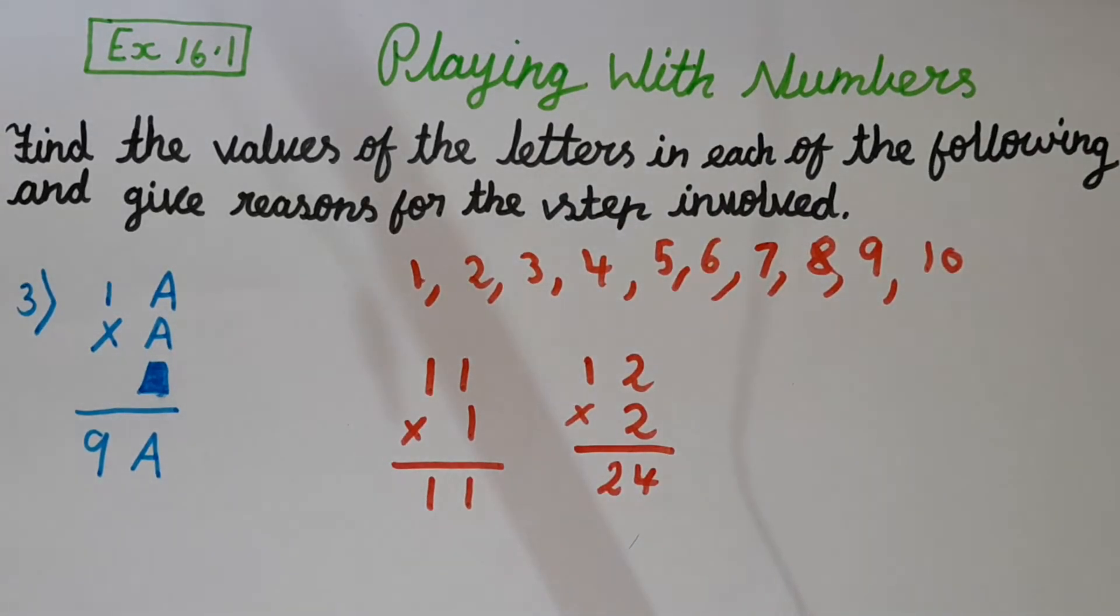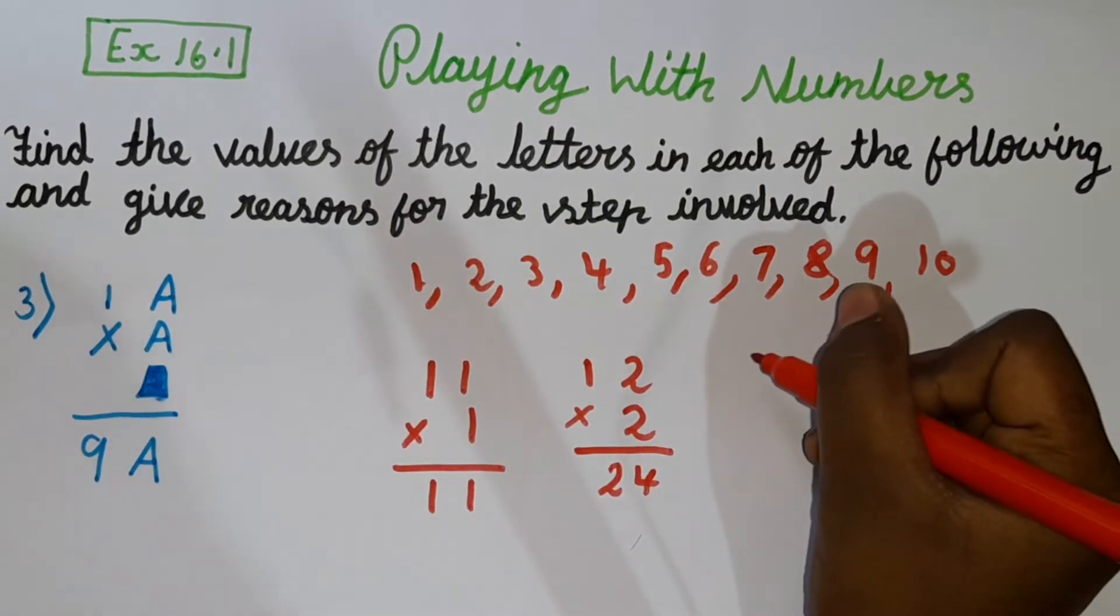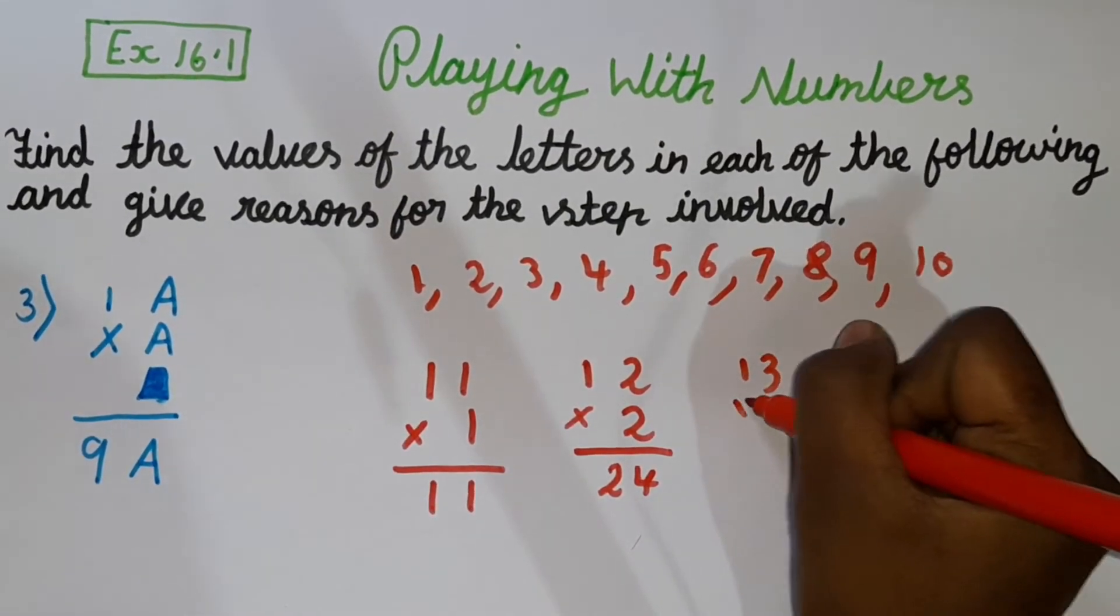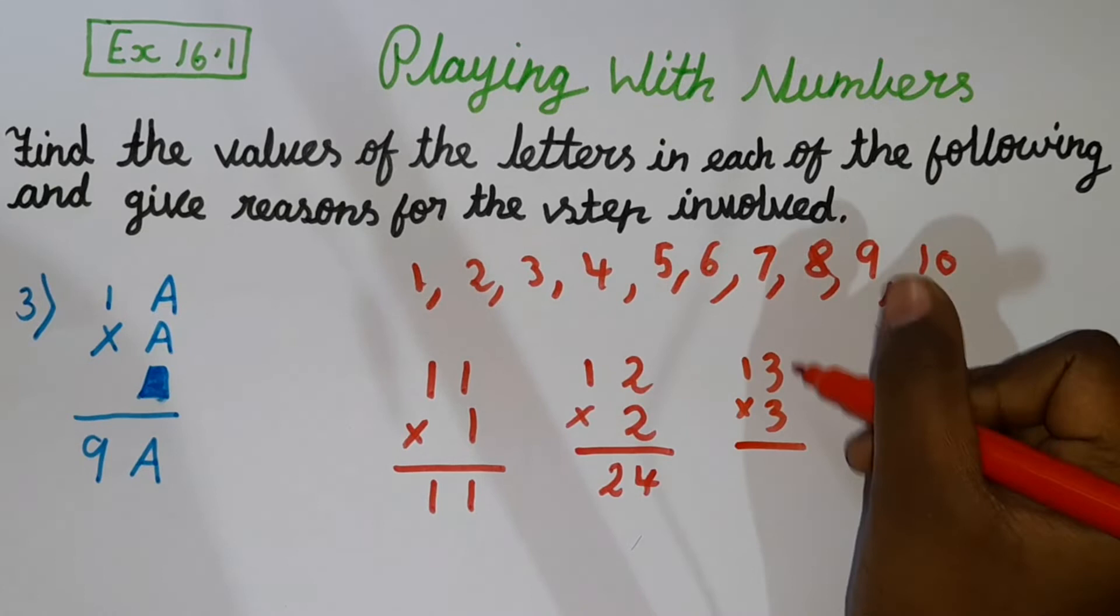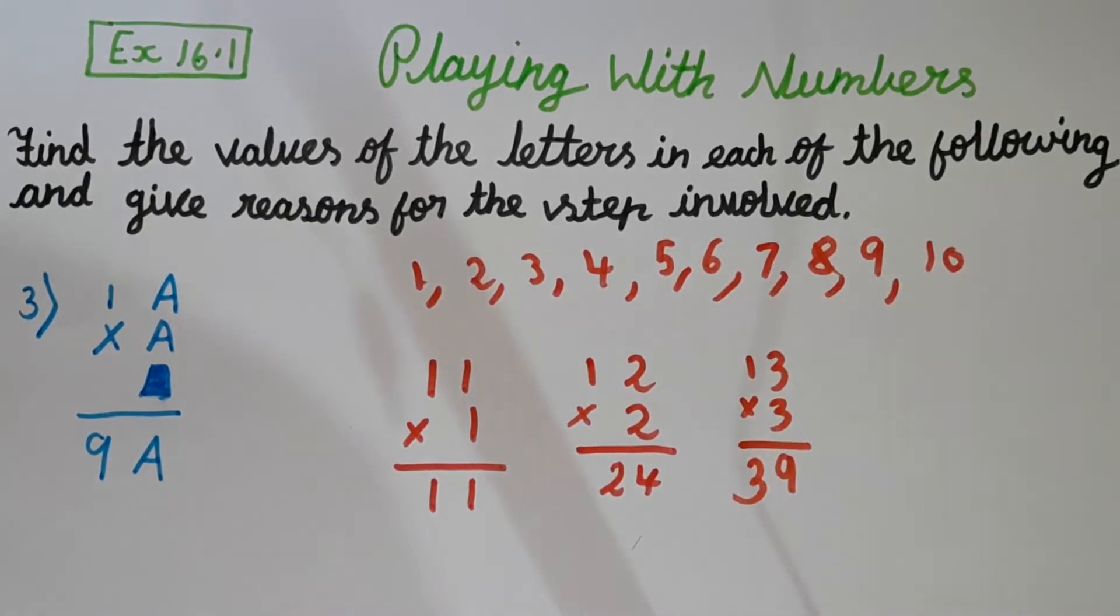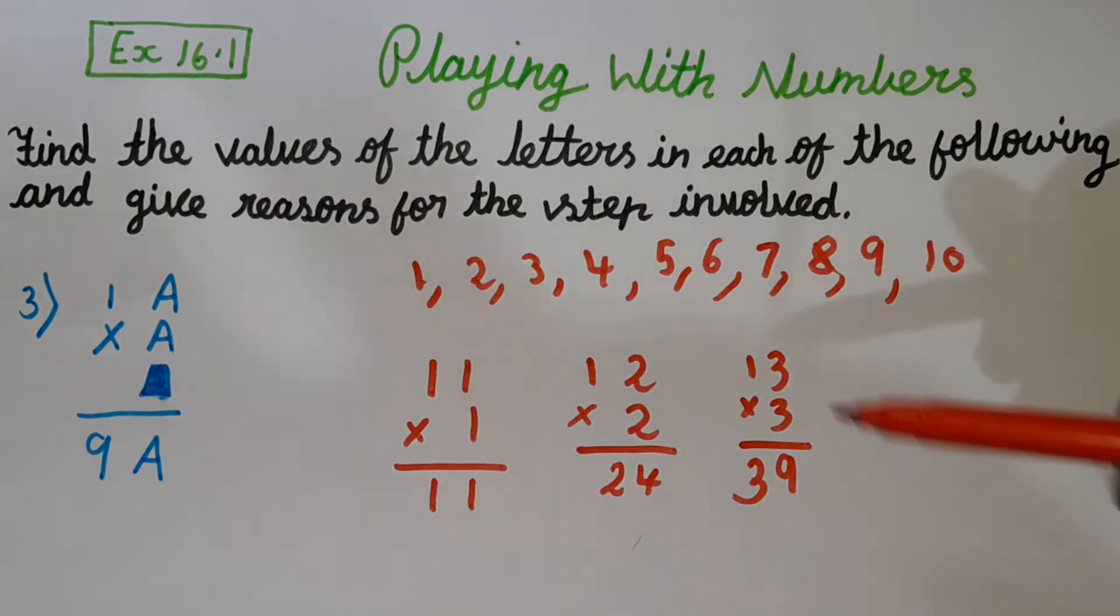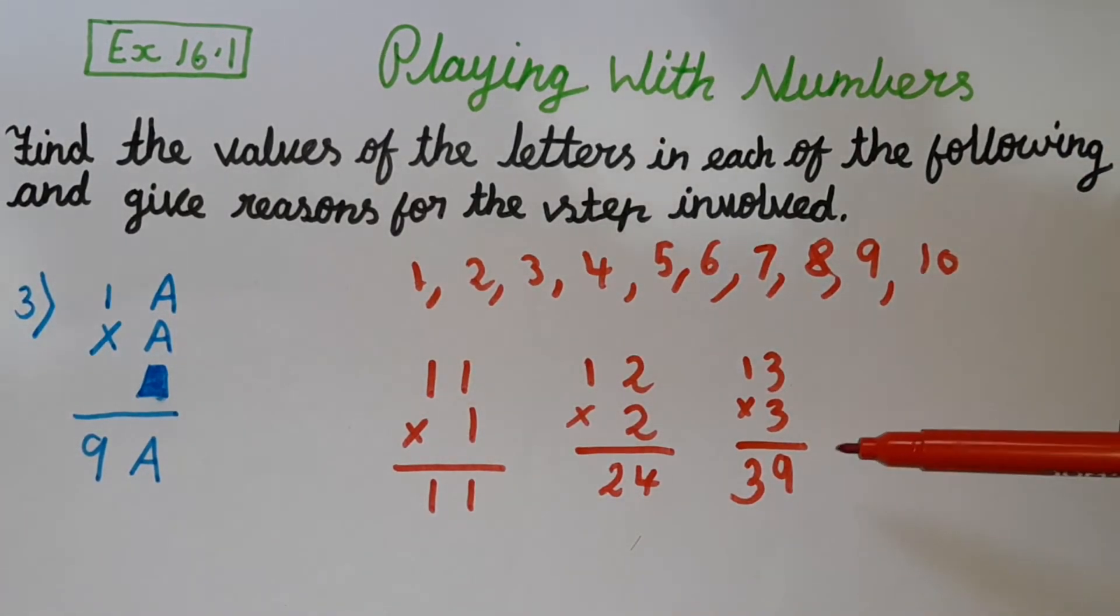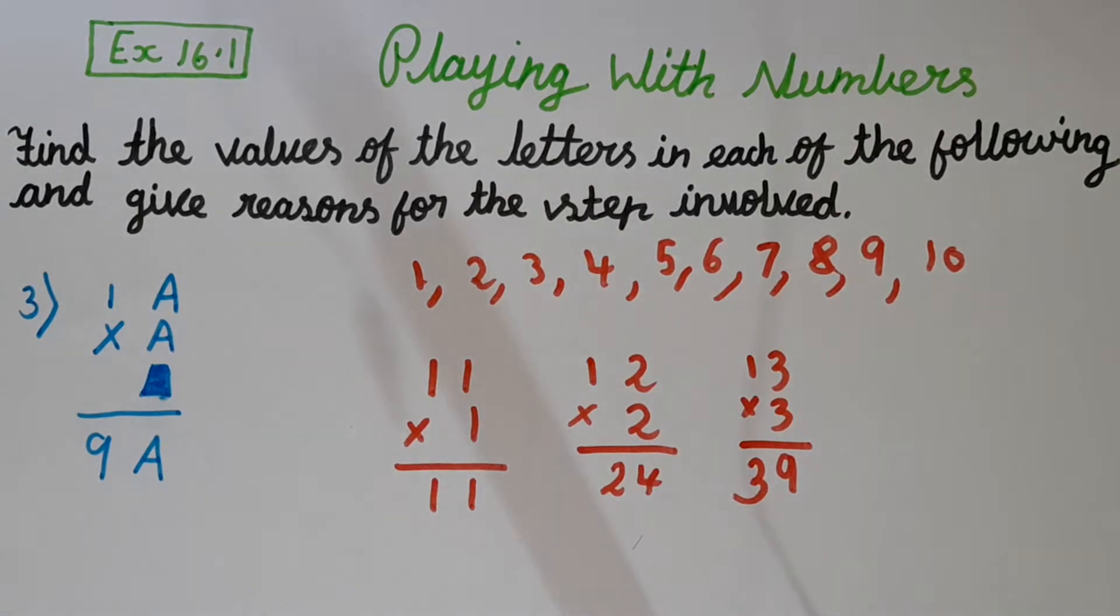Now let's try with 3. So 3 times 3 is 9, 3 times 1 is 3. In this also it's not possible because here we have the same number, but here we have 9 which is not the same number.